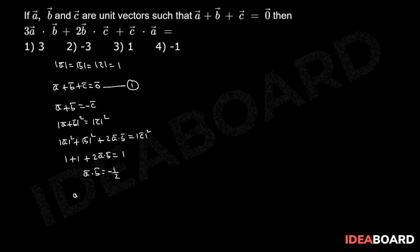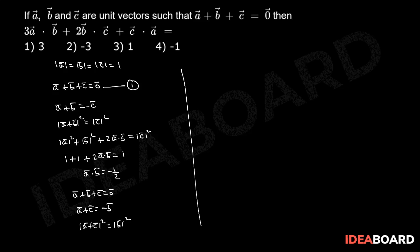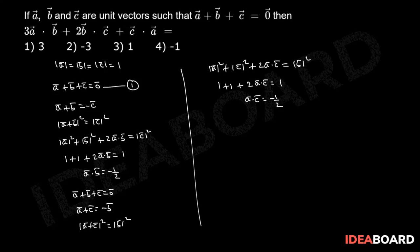Similarly, from equation 1, a bar plus b bar plus c bar equals 0 bar implies a bar plus c bar equals to minus b bar. By taking modulus and squaring on both sides, mod of a bar plus c bar whole square equals mod b bar whole square. This implies mod a bar square plus mod c bar square plus 2 into a bar dot c bar equals mod b bar square. Implies 1 plus 1 plus 2 into a bar dot c bar equals 1, implies a bar dot c bar equals minus 1 by 2.